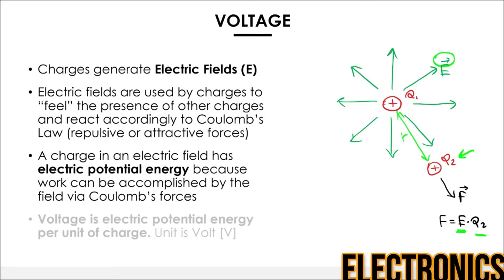The force F applied to Q2 will push it away and do work on Q2, because there is movement and a force in the same direction. So because there is the possibility of work arising from the relative position of Q2 and Q1, we can say Q2 has a certain potential energy. Q2 will have lower energy if it's very far from Q1, because the electric field intensity is very small, whereas if the two charges are very close, they have a lot of potential energy.